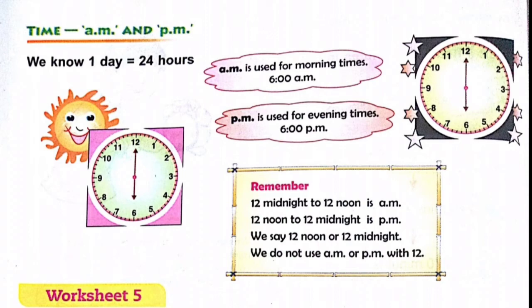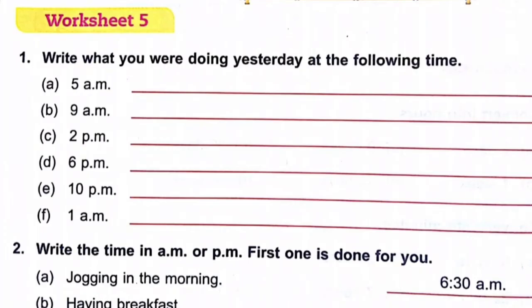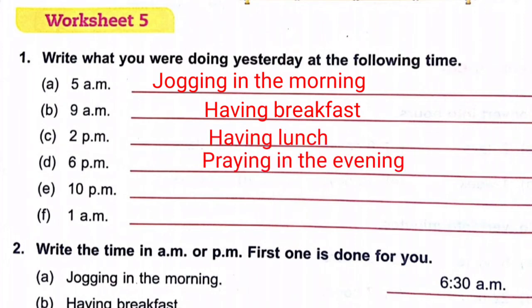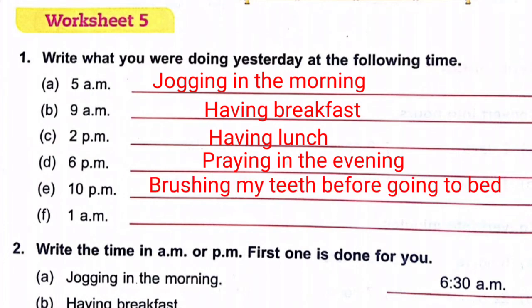Note that noon and midnight themselves are not written as AM or PM. For the question asking what you do at 5 PM, you may write any answer — for example, jogging or playing. There is no fixed answer for these activity-based questions. At 1 AM, the answer could be 'sleeping'.